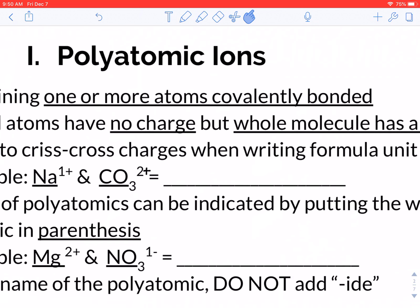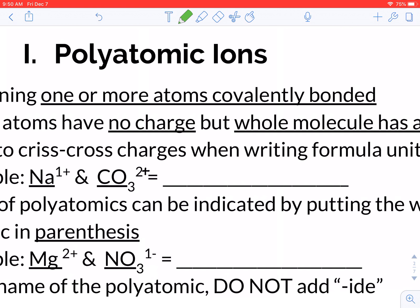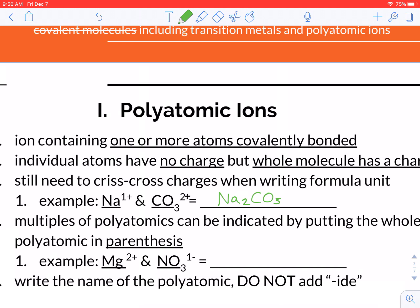So if we take a look at this first example here, we are just going to take that 1, crisscross it over to the carbonate, and the 2, and crisscross it over to the sodium. So when we write that out, Na gets a 2, and our CO3 would get a 1, and if you remember, we don't actually need to write the 1s out because they're redundant.